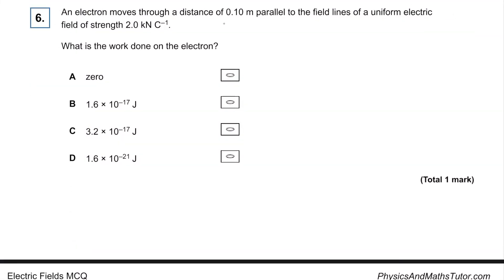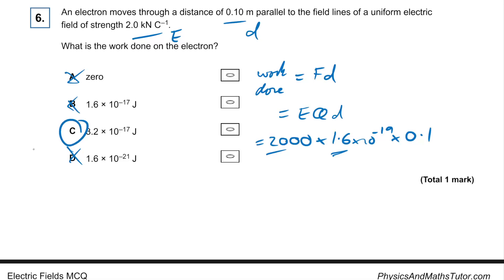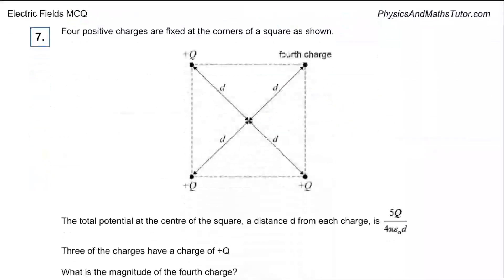Question six: an electron moves through a given distance with a field strength given. Work done equals force times distance, and electric force equals EQ, so work done equals EQD. That's 2000 times 1.6×10⁻¹⁹ times 0.1. Two times 1.6 gives 3.2, so it can't be A, B, or D — the answer must be C.